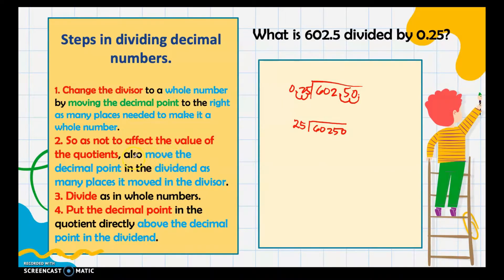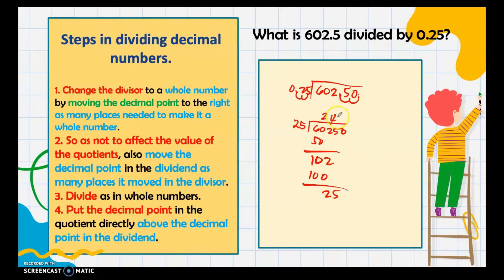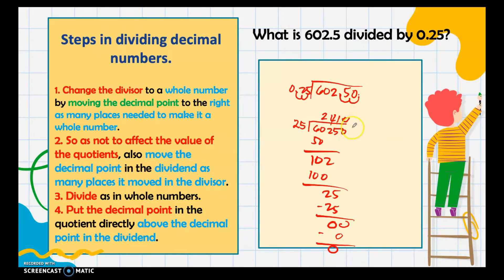As a rule: to not affect the value of the quotient, move the decimal point in the dividend the same number of places as in the divisor. Now divide as with whole numbers: 60250 divided by 25. We get 2, then 50 divided by 25 is 2, bring down 2 giving 25 divided by 25 is 1, bring down 0, divide again — no remainder. Our answer is 2410. Since the decimal point is at the end of the whole number, our final answer is 2410.